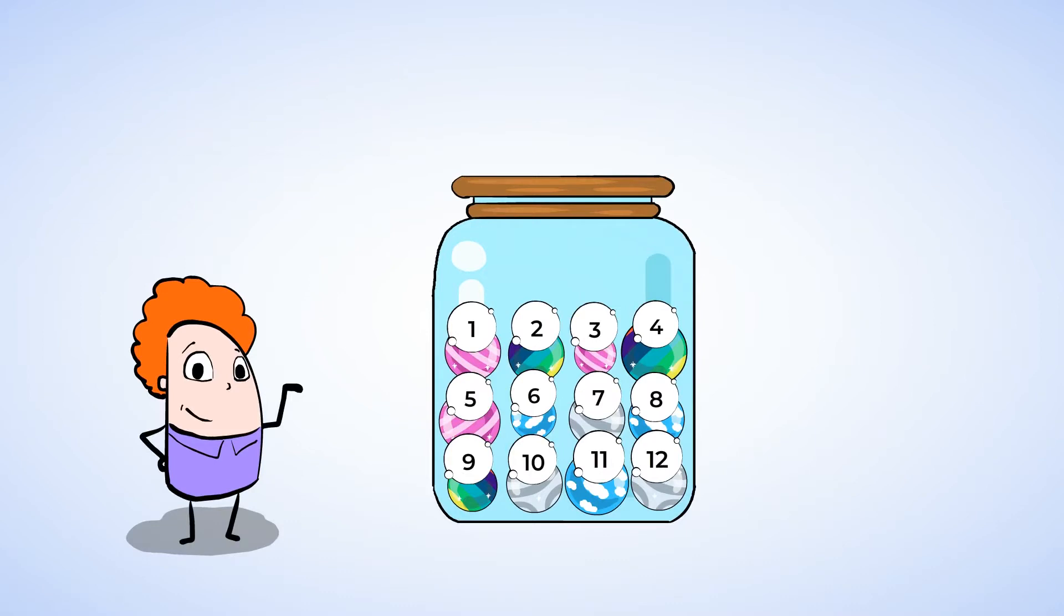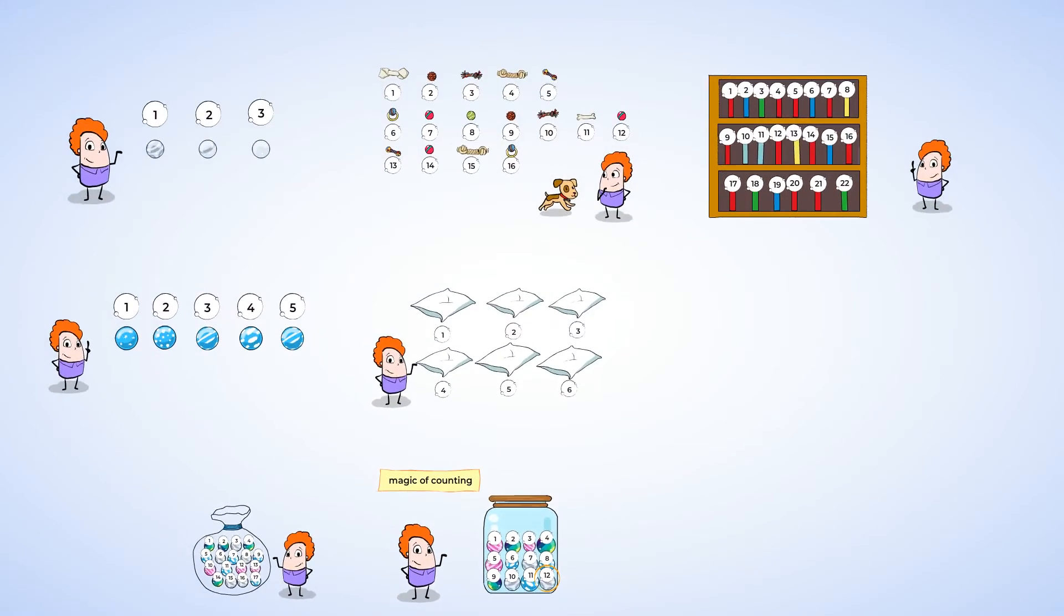We call that the magic of counting. And if you want to know how many, just count one number for each object. The last number you count is the number of objects you have. Keep on counting, and I'll see you soon, my mighty friend.